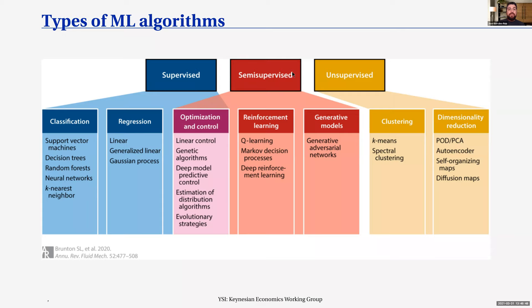Semi-supervised algorithms are really interesting. You have some part of your data labeled and some part unlabeled, and the algorithm can learn the label for the unlabeled cases. Also you have reinforcement learning — you can simulate an environment where agents compete with each other and have a reward function, so they learn to play the game and get better and better. This can help you generate data when you don't have good enough data.